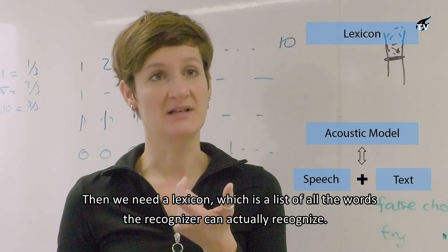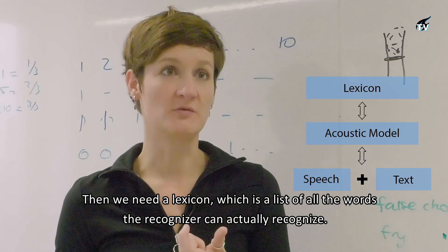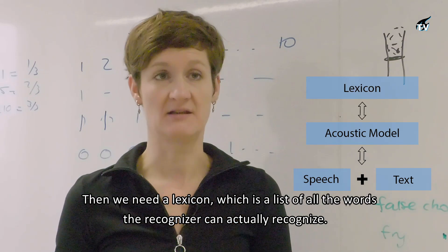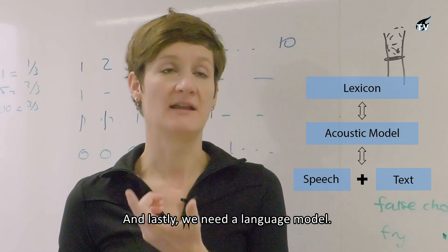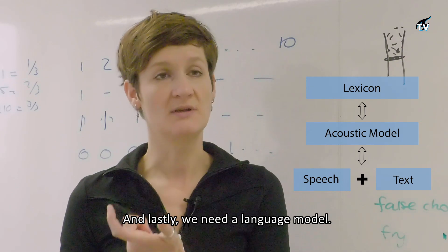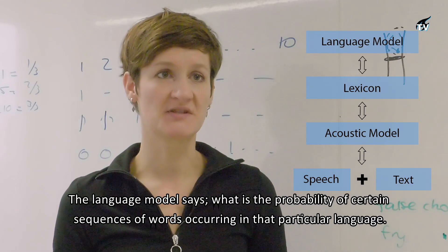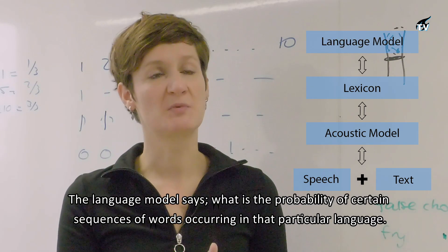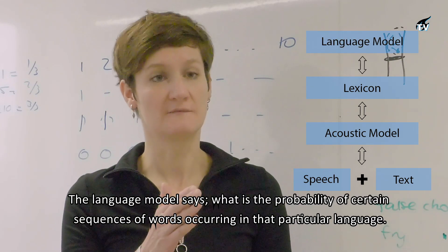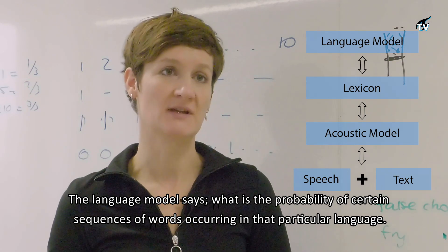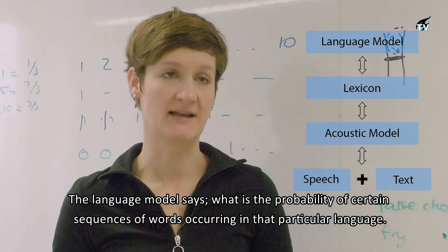Then we need a lexicon, which is a list of all the words the recognizer can actually recognize. And lastly we need a language model, which describes the probability of certain sequences of words occurring in that particular language.